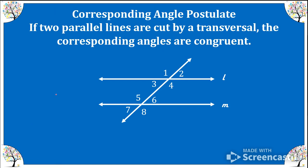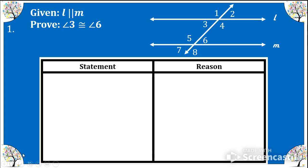Let's recall our corresponding angle postulate — we'll use that for the first few proofs we do today. If two parallel lines are cut by a transversal, the corresponding angles are congruent. Remember, corresponding means in the same location, like angles 1 and 5, 3 and 7, 2 and 6, and 4 and 8. Those are the corresponding angles.